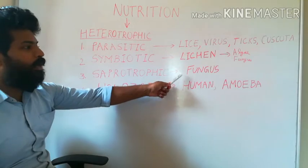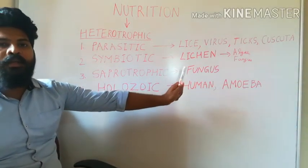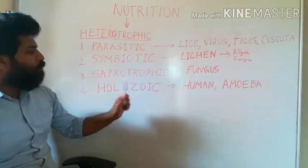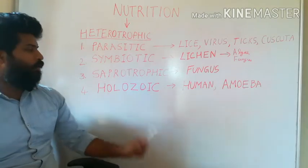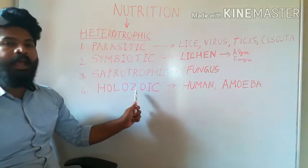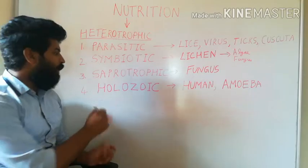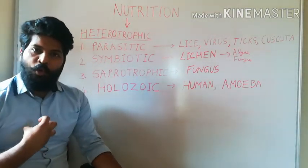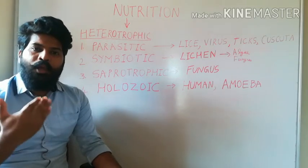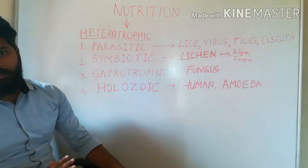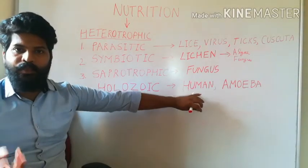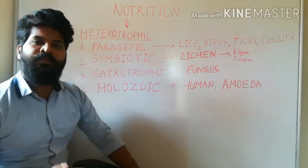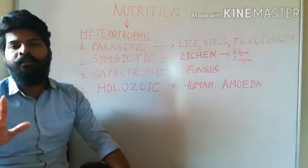Fungus obtains nutrition from dead and decaying organic matter. The last mode of nutrition is known as holozoic mode. 'Zoa' means animals. These are animals which obtain food as a whole — the food is first taken in as a whole and then broken down and digested inside the body. Examples are human beings and amoeba, which also obtains its food directly and then breaks it down inside the cell.